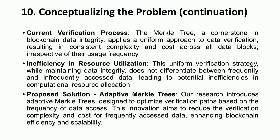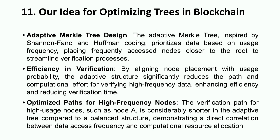What we are proposing is an adaptive tree that uses the frequency distribution of use and narrows the search complexity accordingly, thus enhancing the efficiency and scalability of blockchains. Our adaptive Merkle tree, inspired by Huffman encoding, prioritizes data based on usage frequency, placing frequently accessed nodes closer to the root to streamline the verification process. By aligning node placement with usage probability, the adaptive structure significantly reduces the path length and computational complexity for verifying high-frequency data, enhancing efficiency and reducing verification time.